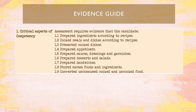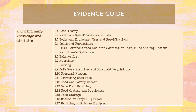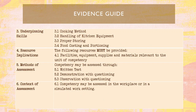The evidence guide: critical aspects of competency — assessment requires evidence that the candidate must have prepared ingredients according to recipes, cooked meals and dishes according to recipes, presented cooked dishes, prepared appetizers, prepared sauces, dressings and garnishes, prepared desserts and salads, prepared sandwiches, stored excess foods and ingredients, and converted unconsumed cooked food. Underpinning knowledge and attitudes, underpinning skills including different cooking methods, handling of kitchen equipment, proper storing, and food costing and portioning are required.